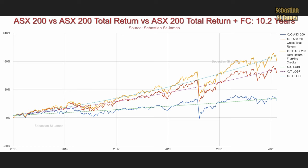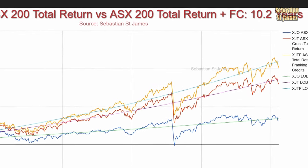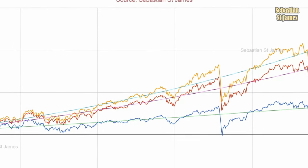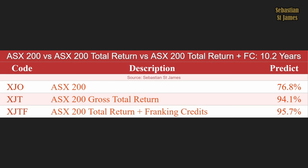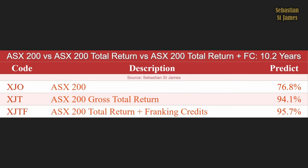What happens if you add in your franking credit? Does that make it even more predictable? Here is the ASX200 without dividends, the ASX200 total return with dividends, and the total return plus franking credits, over 10.2 years. Add in the dividends and we get 94.1%; add in the franking credits and we get 95.7%. The franking credit adds a little bit of cream on the top, but it's the dividend itself that's adding most of the predictability.